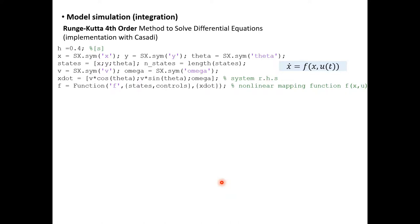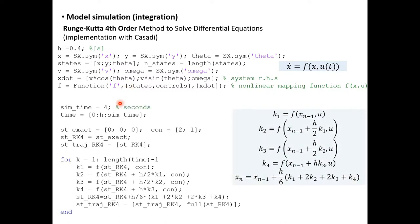All right, so let's look now at the implementation of this method in MATLAB using Kasady. In this slide I will show only the simulation, which means no integration with the MPC code yet. At the beginning we will define our system model as usual symbolically. Then we will specify some parameters like the simulation time, the initial condition, and the control action. Here we use 2 for v and 1 for ω. The initial condition is the origin for our state vector.